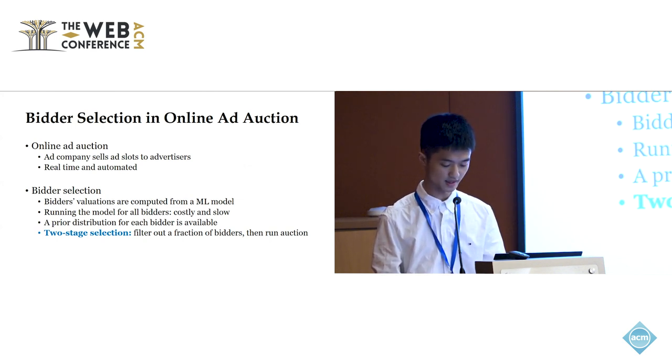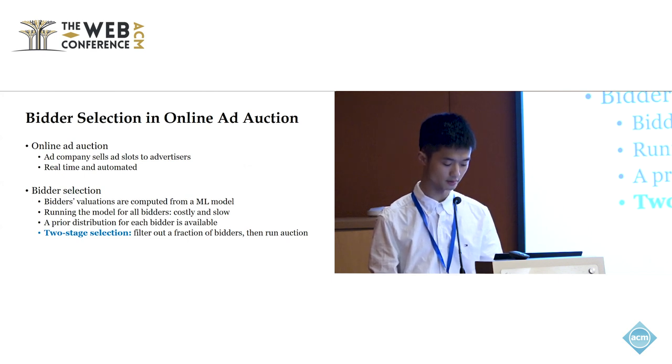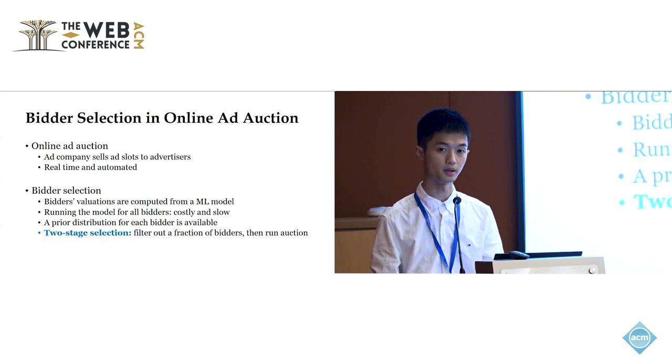It first filters out a fraction of advertisers using prior distributions of the advertisers' valuations, and then runs a proper auction for the remaining advertisers using the complex model. The process of selecting advertisers using prior value distributions is called the Bidder Selection Problem.